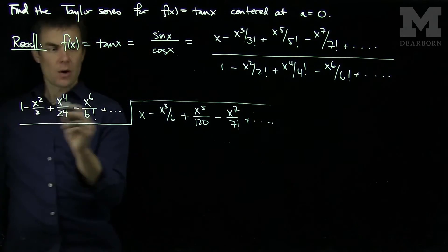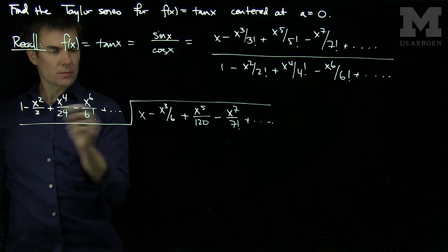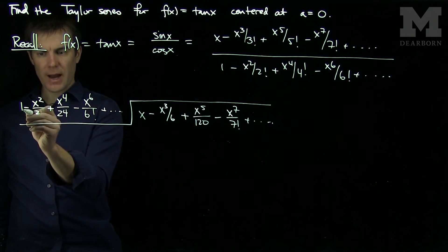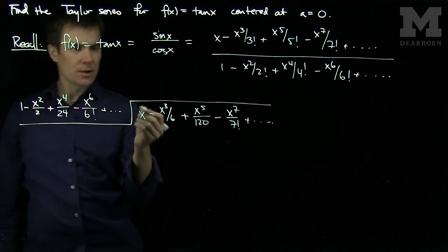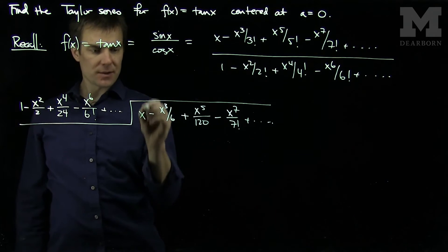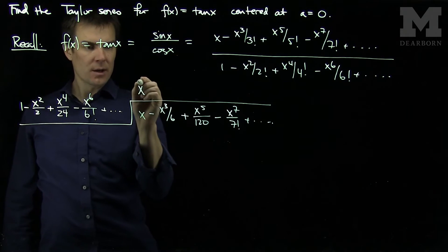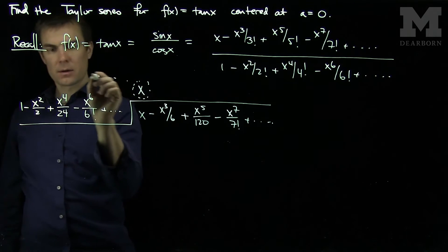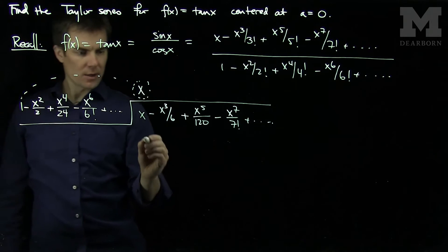And so we ask the question, what do I need to multiply 1 by to get x? So I need to multiply 1 by x to get this x over here. So I put an x over here. Now x times 1 is going to be an x.